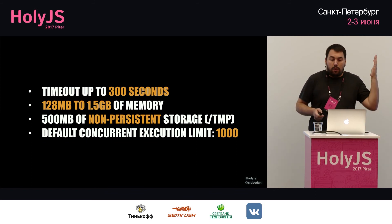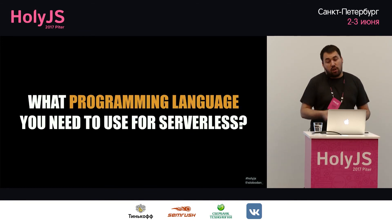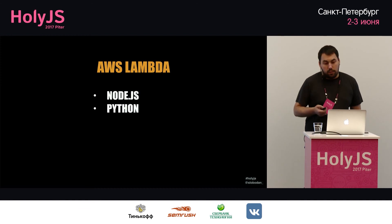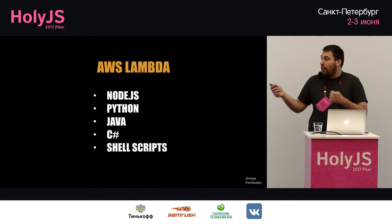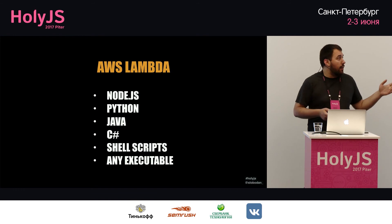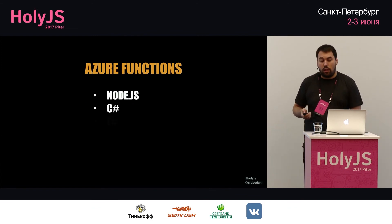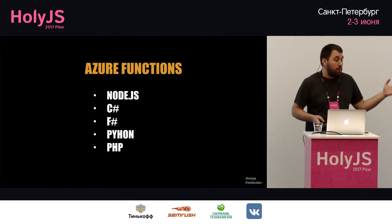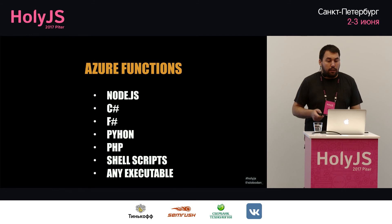On AWS Lambda you can use Node.js, Python, Java, C#, and essentially any shell script or executable that runs on Linux. Azure Functions supports Node.js, C#, F#, Python, PHP, and PowerShell. Google Cloud Functions currently only supports Node.js, though they'll likely add more languages.